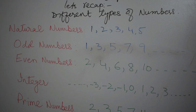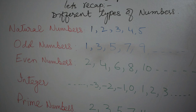Bismillahirrahmanirrahim. Let us start with reviewing number concepts. It is chapter number one and let us recap the different types of the numbers. First of all, you see here it is written natural numbers and it is a list. I am going to tell you one by one. The natural number starts from one, two, three, four, five. In fact, these are the numbers which occur in nature.